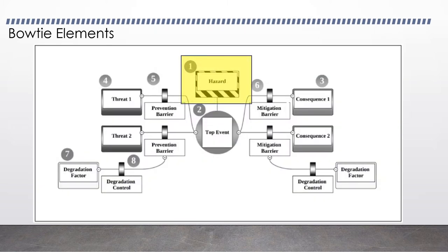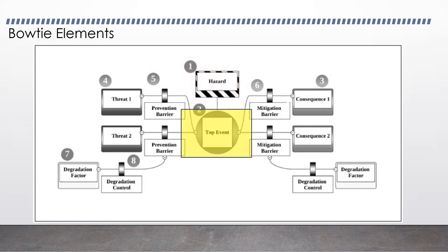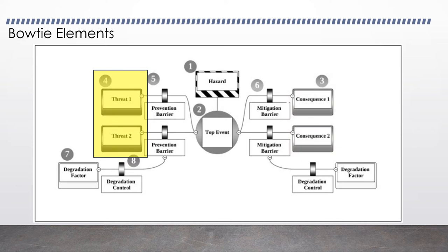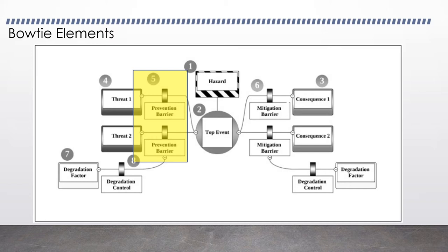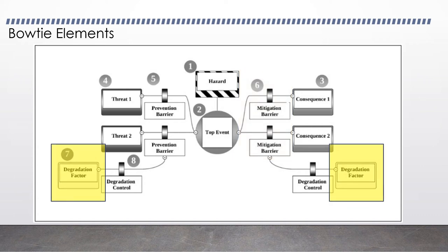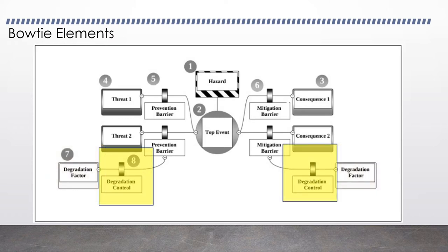The Bowtie model contains eight elements. First, hazard. Second, top event. Third, consequences. Fourth, threats. Fifth, prevention barriers. Sixth, mitigation barriers. Seventh, degradation factors. And eighth, degradation controls.